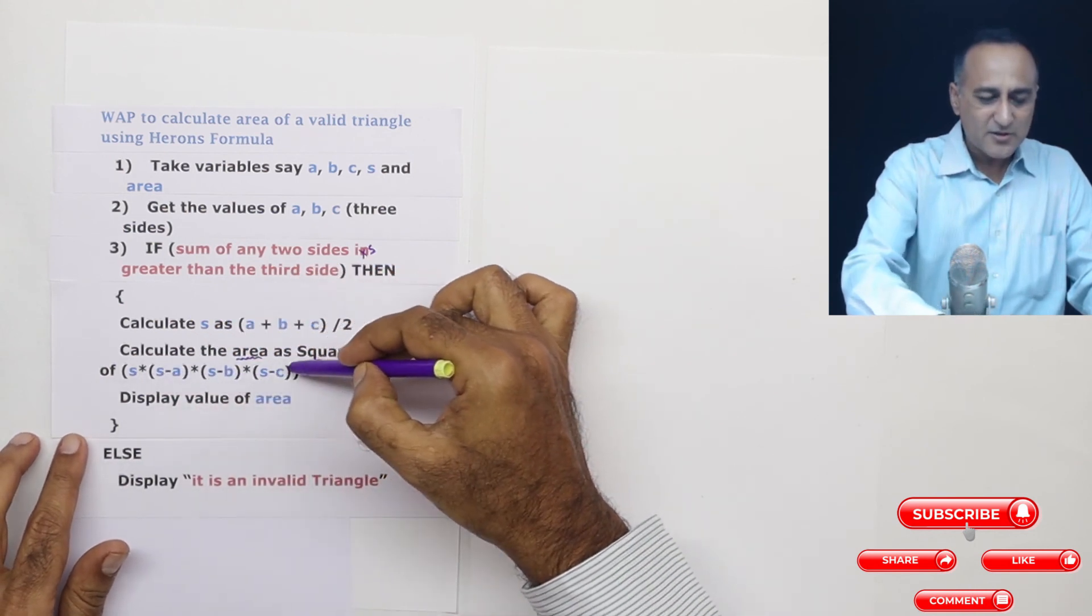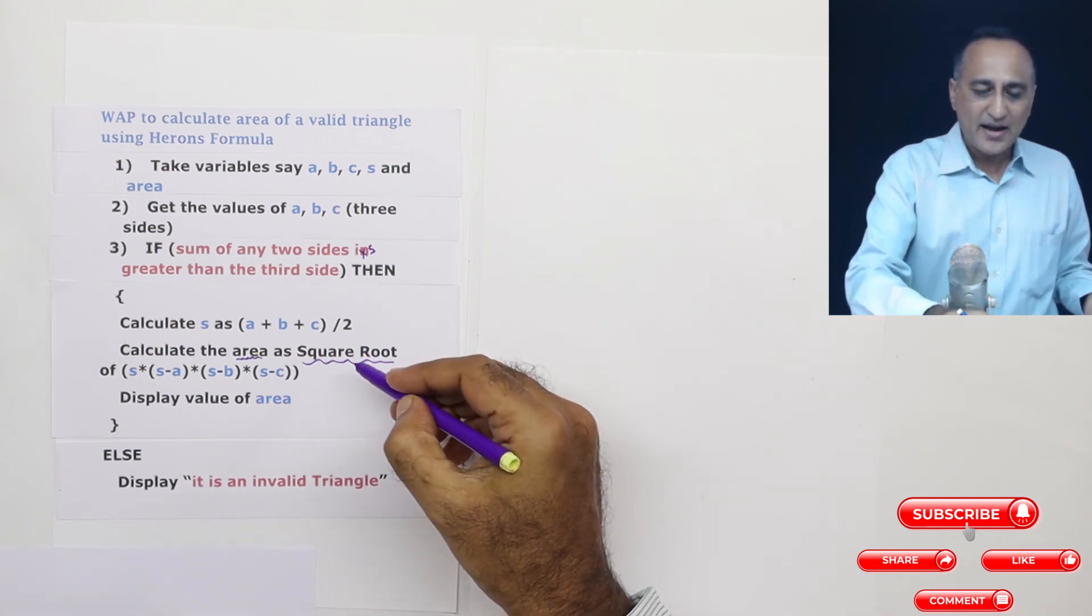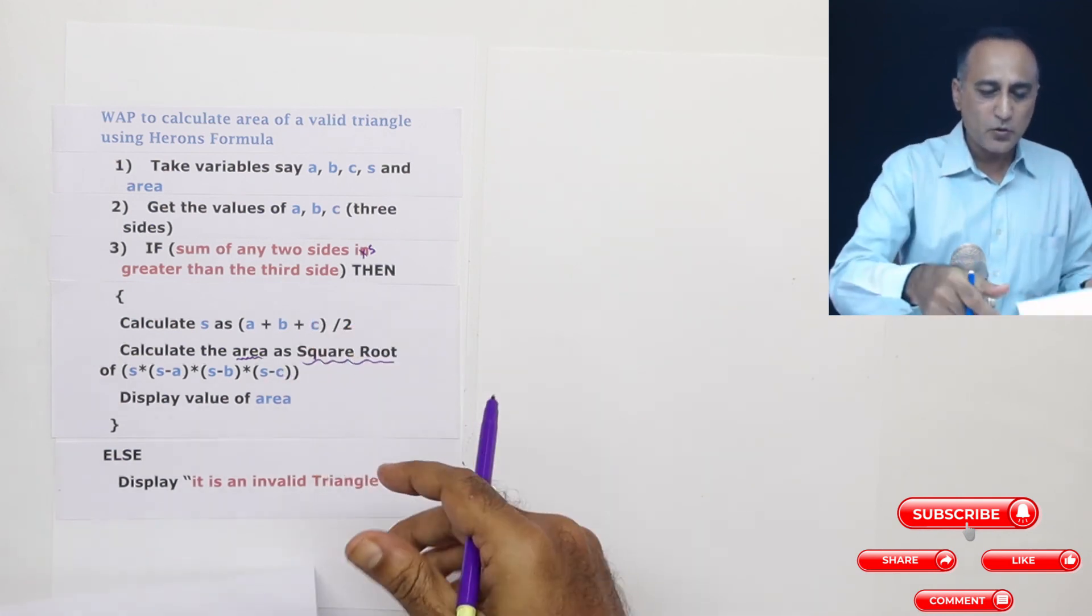This entire thing is first going to lead to a single number. That single number is going to be sent to square root and the resulting square root is going to be sent to area.